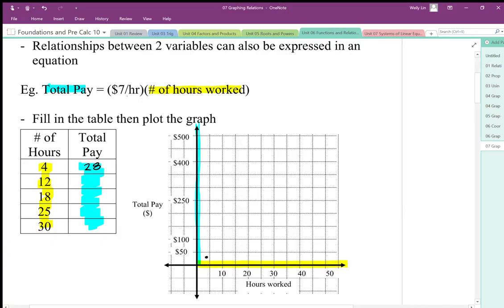12 hours times $7 an hour, that's going to give us $84 of total pay. So at 12, we're going to get about up here for our total pay.